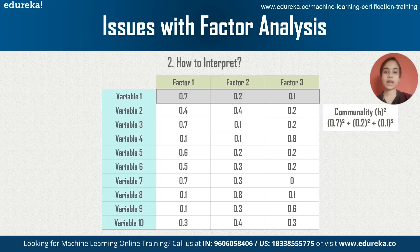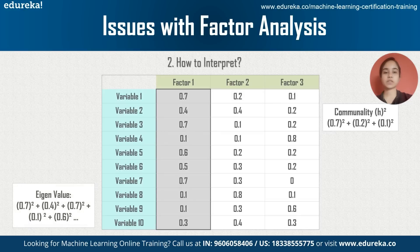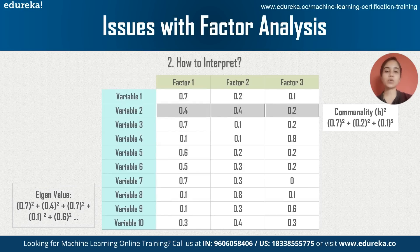For deeper analysis, you can calculate the communality of a variable, given by the horizontal sum of squares of its loading values. For example, for variable one it would be 0.7² + 0.2² + 0.1². The vertical sum of squares of values for a factor is called the eigenvalue — for factor one, it would be 0.7² + 0.4² + 0.7² + 0.1², and so on. If a variable shows high correlation with more than one factor, this is called cross loading, and variable rotation should be performed.